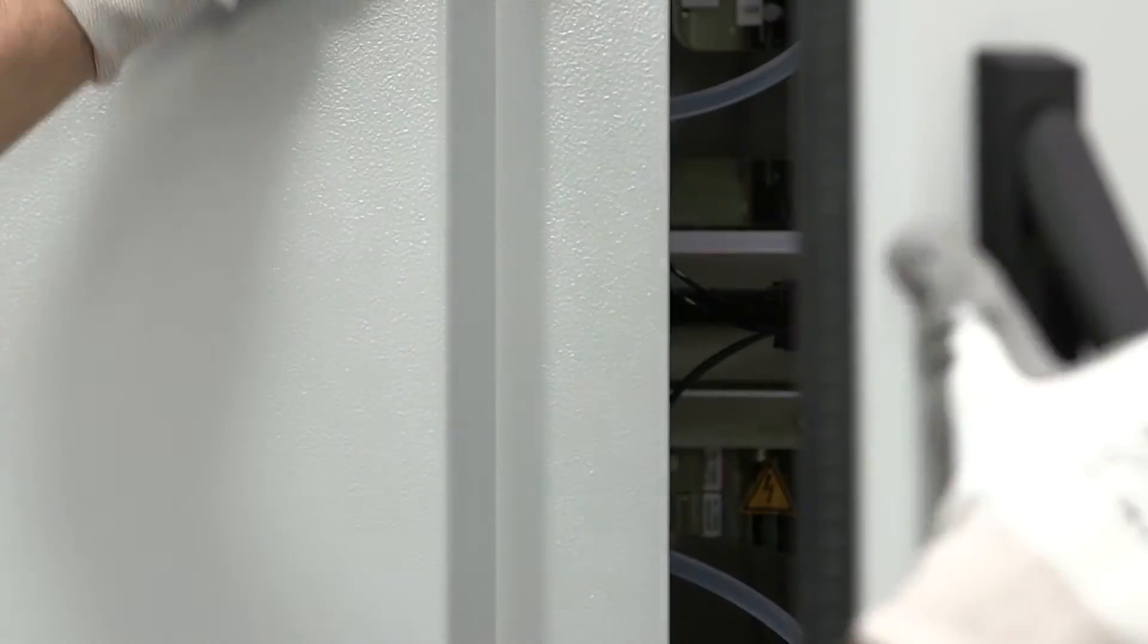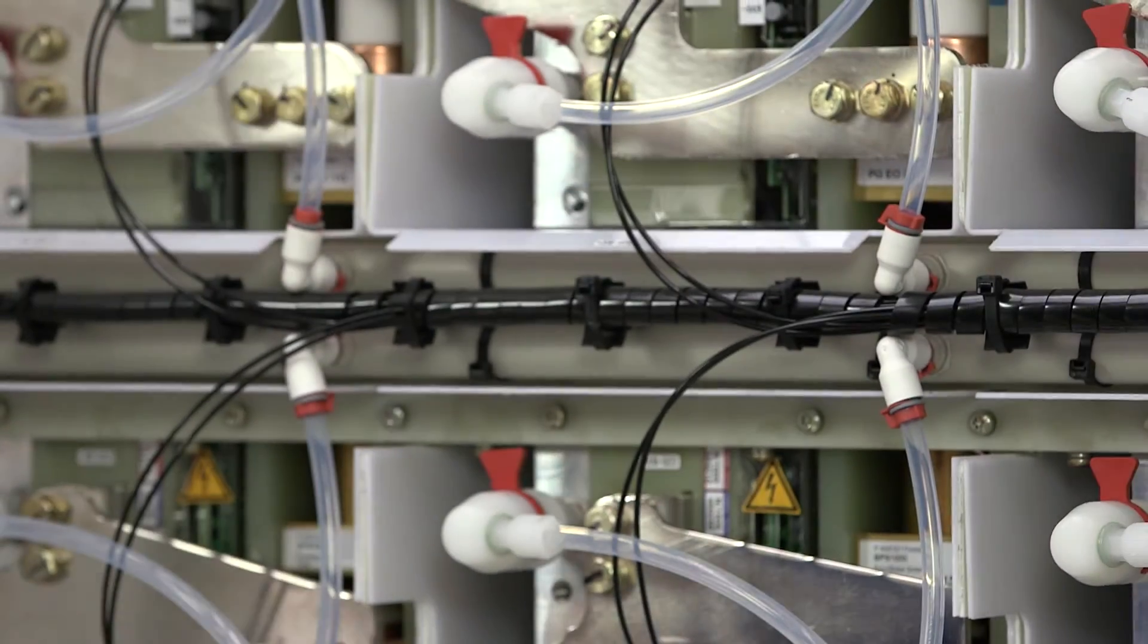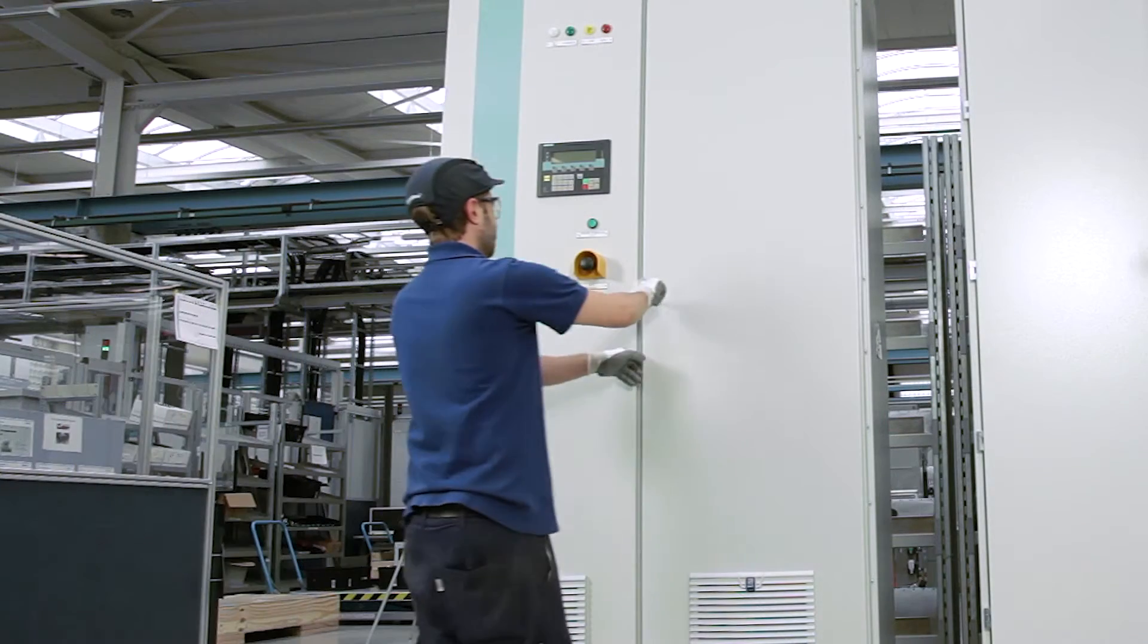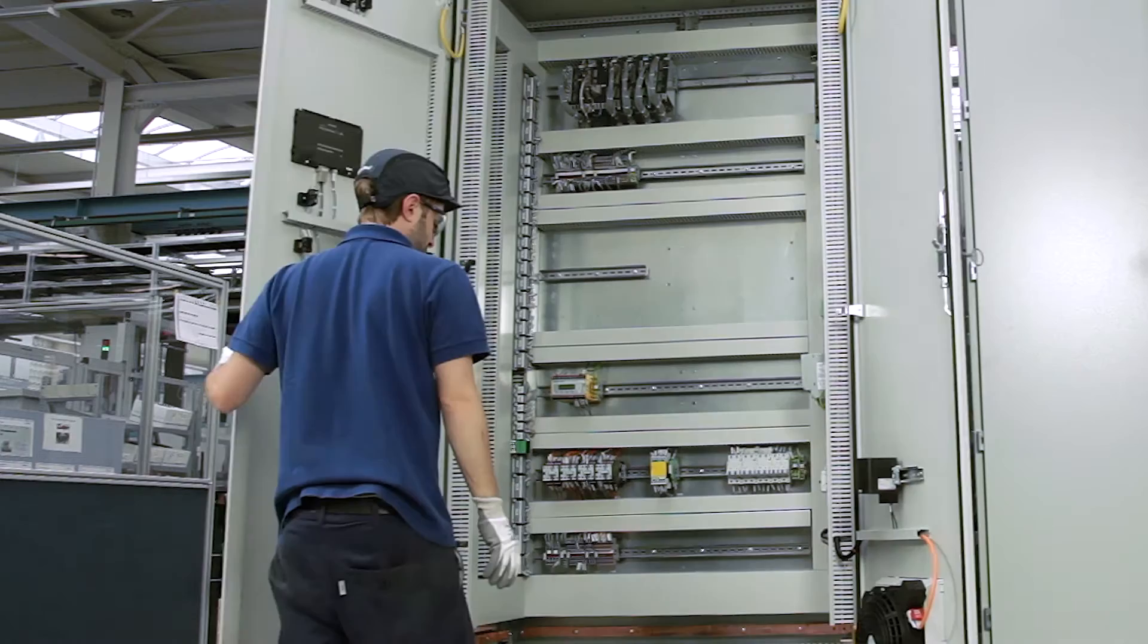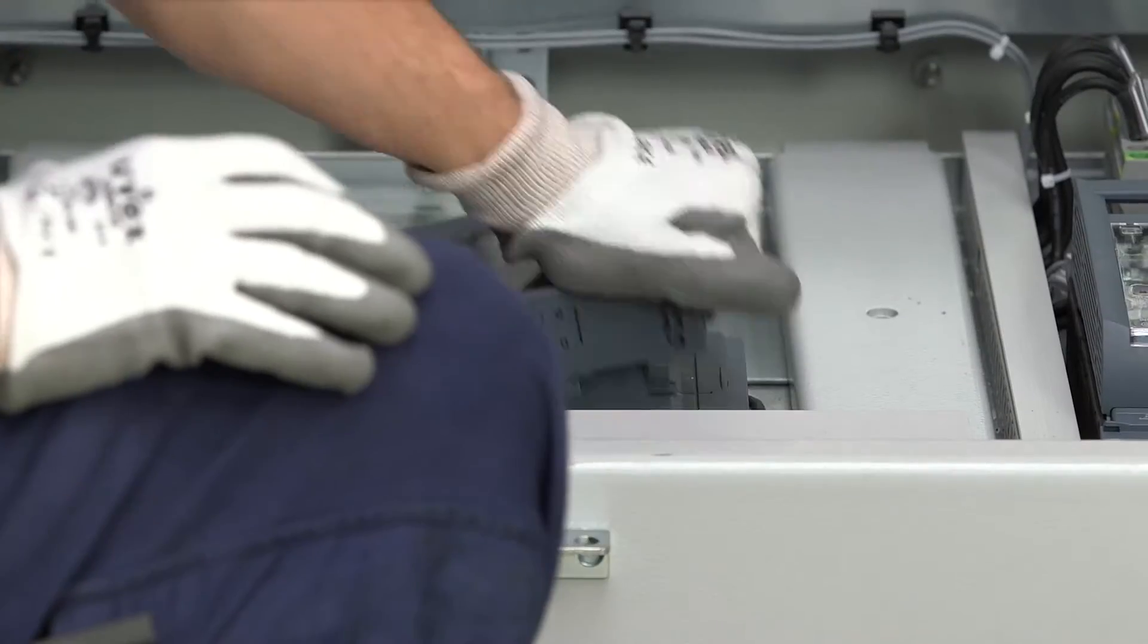To open the door handles, use the cabinet key shipped together with the drive. Make sure before working on or in the power section that you also disconnect all of the auxiliary voltages.